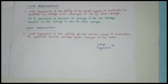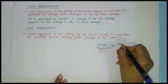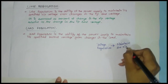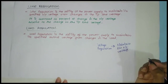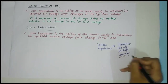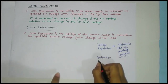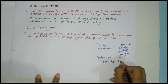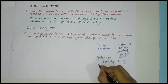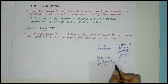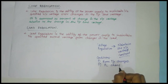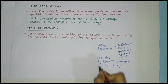Hello guys, welcome back. I am Dhruvi and today we'll be learning about line and load regulation. Before diving directly into it, let us first understand what a voltage regulator does. The voltage regulator's main aim is to maintain the output voltage — that is, to keep the output voltage constant. Even though the input changes, the output voltage should be constant, and even though the load resistance RL changes, it should still maintain the output voltage.